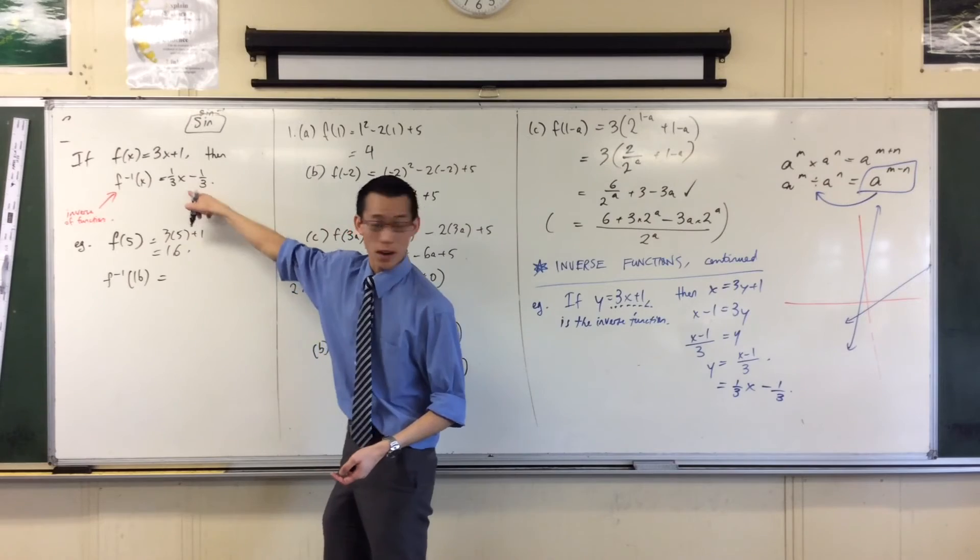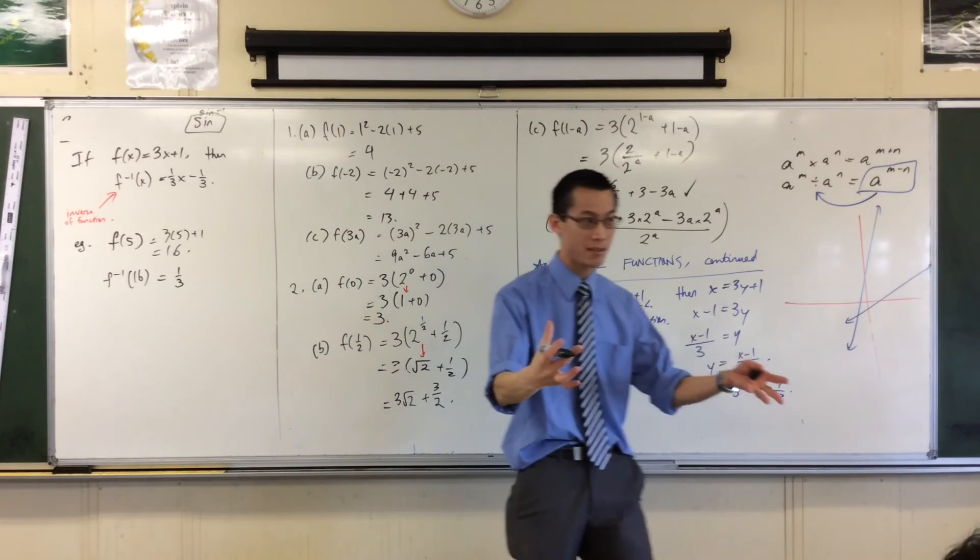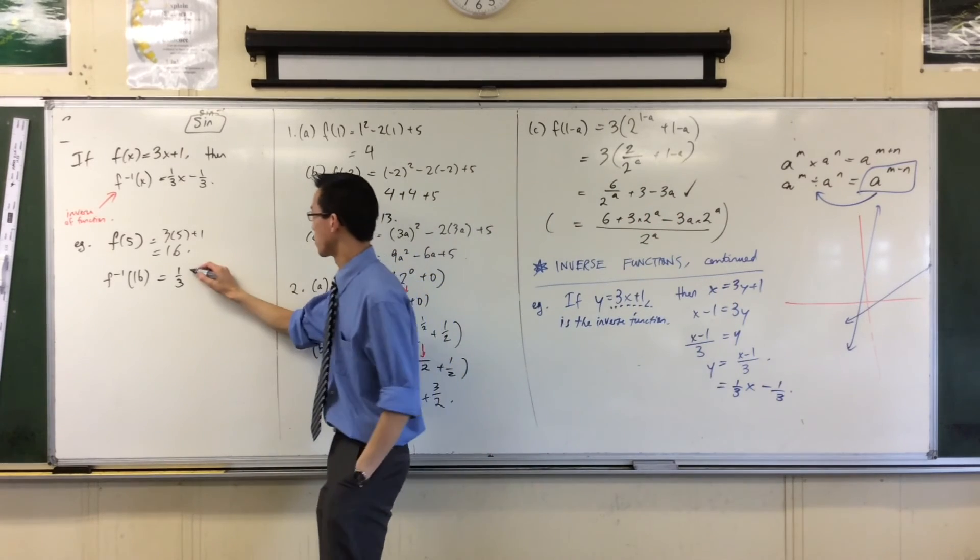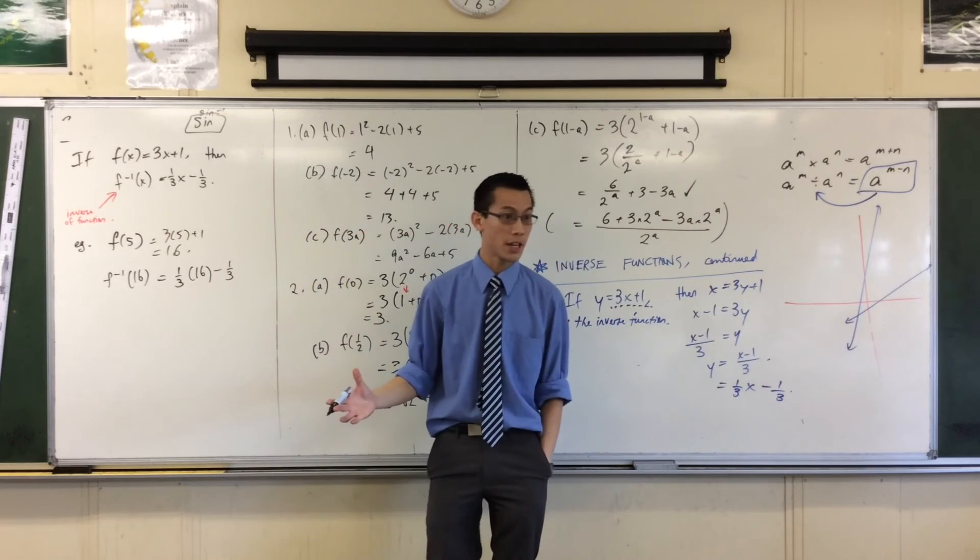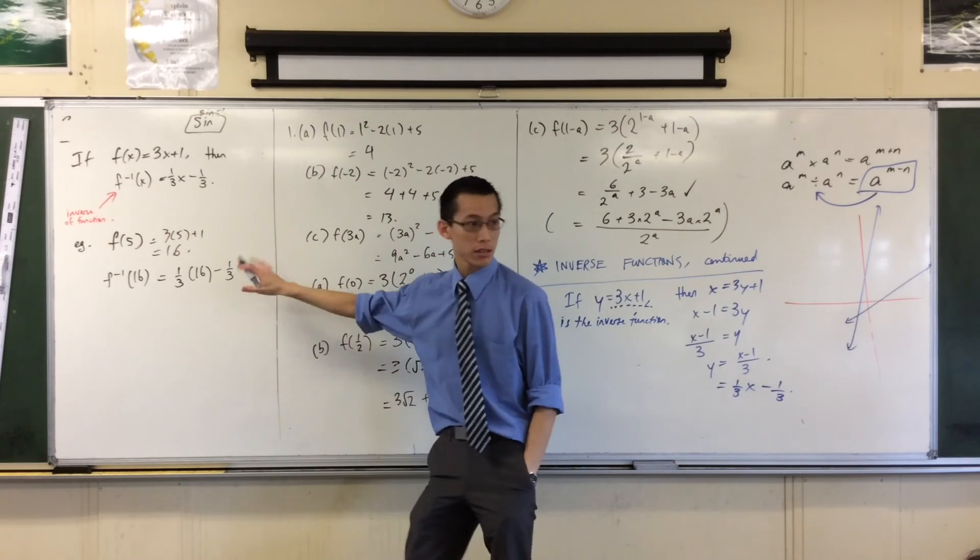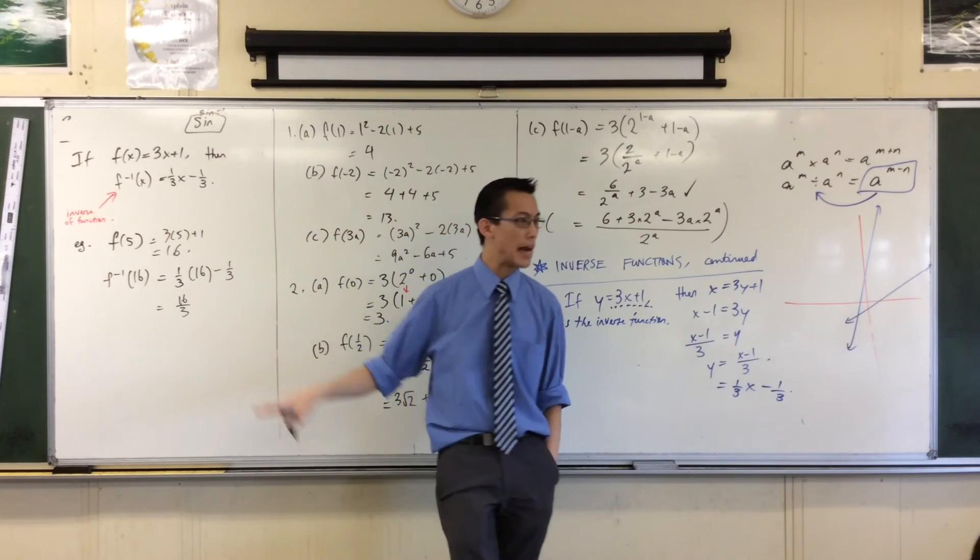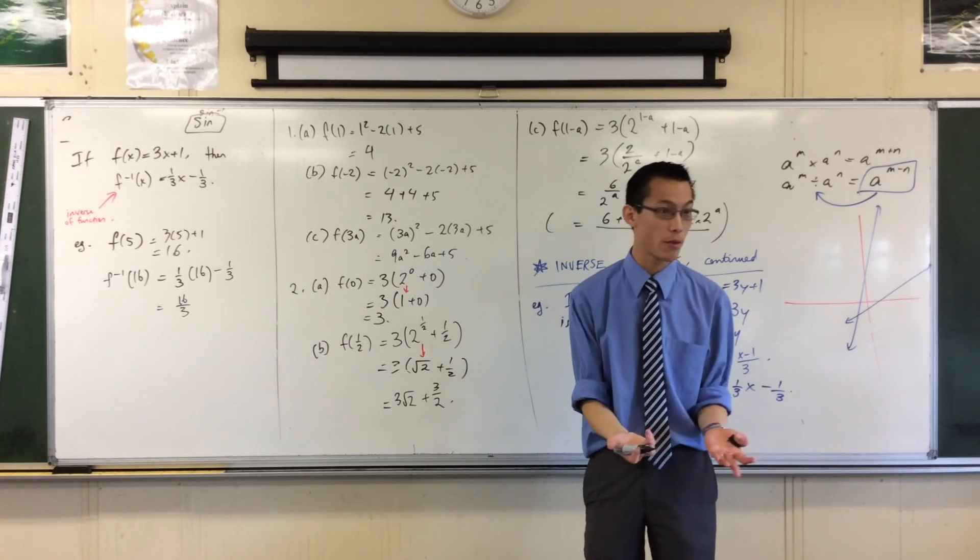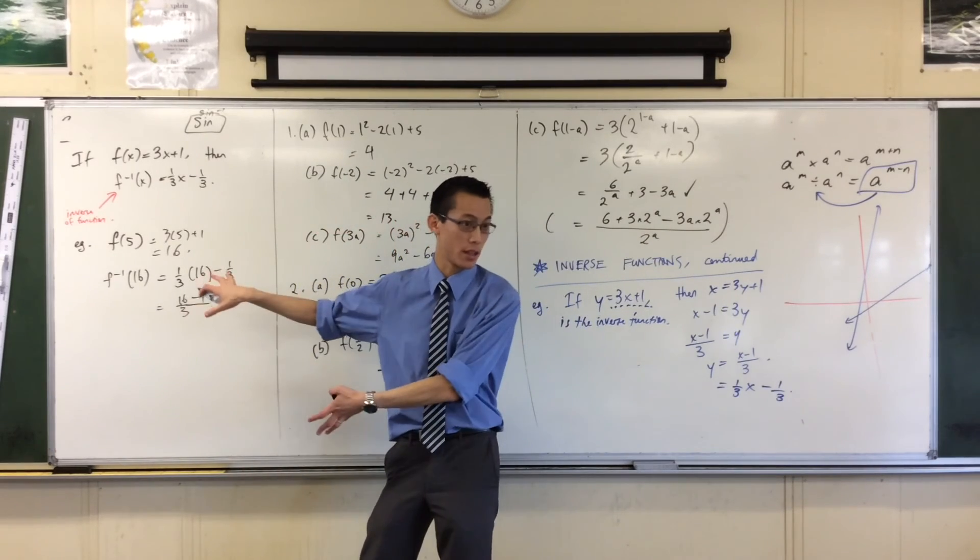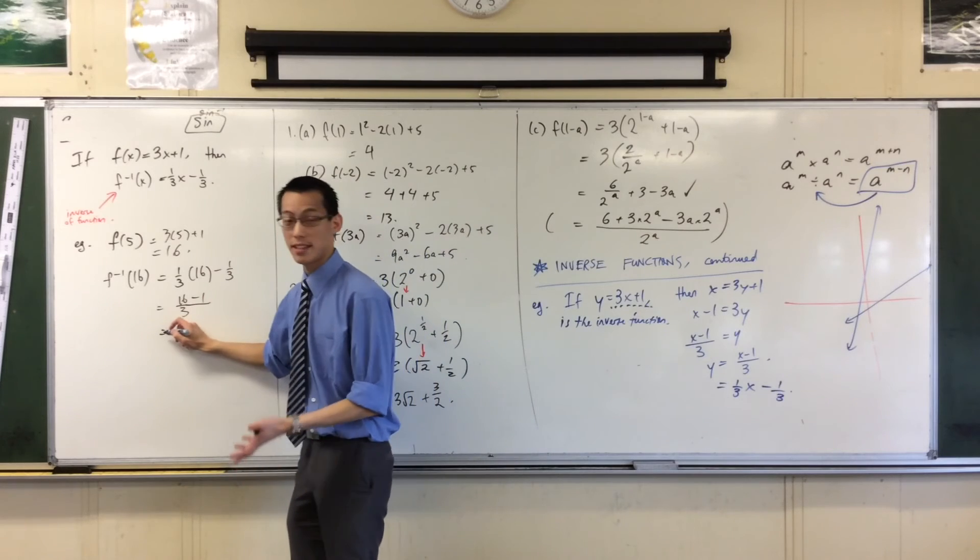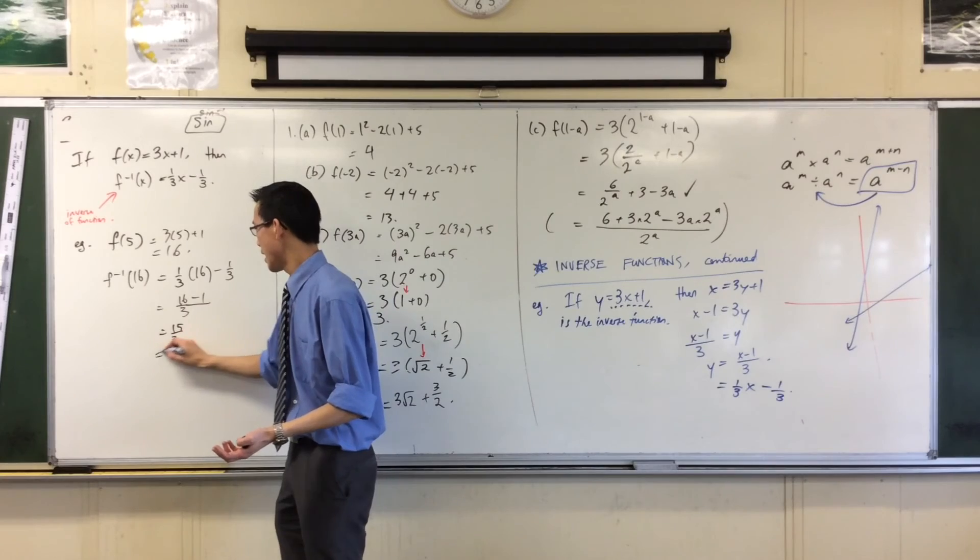Here we go. This is my inverse function. So, I'm just going to dutifully replace every x I see with the number 16. So, I'm going to put a 16 there, minus a third. Let's crunch this through. 16 over 3, and this is minus 1 over 3, so they have the same denominator already. That's kind of handy. So, I'm just going to put that as minus 1. That's that minus a third. 16 take away 1, of course, is 15, 15 over 3, it's 5.